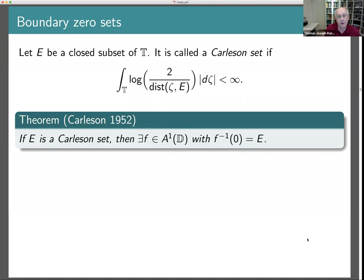It makes sense to ask what subsets of the unit circle can be zero sets for the extended function F*. In the Hardy space this question doesn't even arise, because it doesn't make sense to talk about subsets of measure zero — a boundary function is defined almost everywhere, with an ambiguity of a set of measure zero. If F* vanishes on a set of positive measure, then F must be identically zero. So the question of classifying boundary zero sets for the Hardy space doesn't even arise.